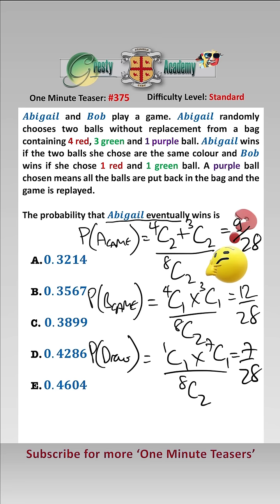We're asked the probability Abigail eventually wins, so we can ignore the draw, and therefore the probability is equal to 9 over 21, which is D, 0.4286.